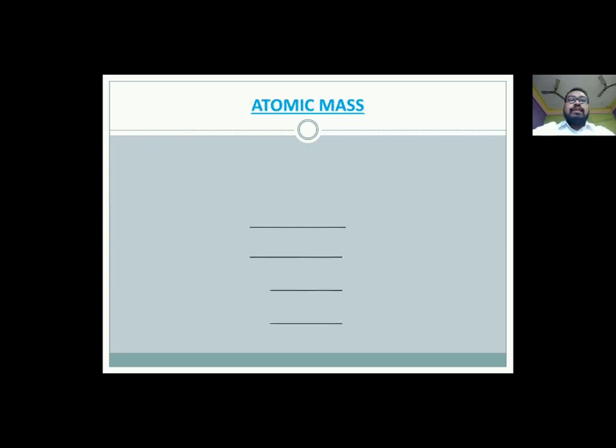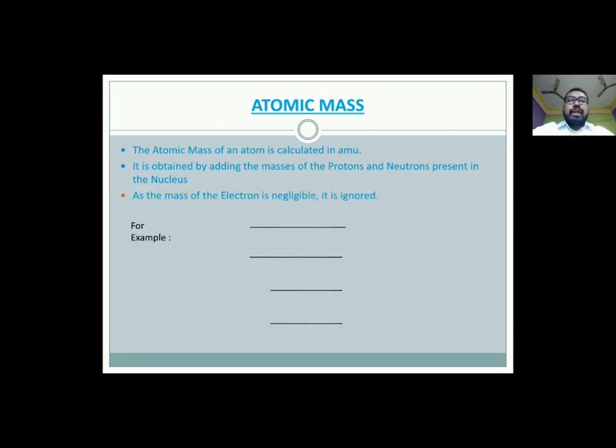Next we have the atomic mass. Atomic mass of an atom is calculated in amu, that is atomic mass unit, and is close to the mass number. It is obtained by adding the masses of the protons and neutrons present in the nucleus. Since the mass of the electron is negligible, it is ignored. Now see for example, see how you can read the elements in a periodic table. The atomic number is written above the symbol and the atomic mass is given below the symbol. The mass number is the nearest whole number to the atomic number. Here 6 is the atomic number. C is the symbol of the element. Carbon is the name of the element. And 12.011 is the atomic mass of this element. That's how you can read the elements in a periodic table.